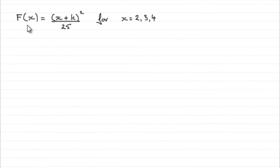We're given this cumulative distribution function f of x equals x plus k all squared over 25 for x equaling 2, 3 and 4. And we've got to work out this value of k. We're told that it's a positive integer and that will play a role towards the end of this solution.